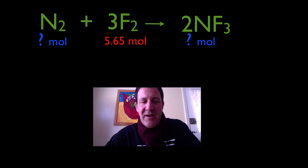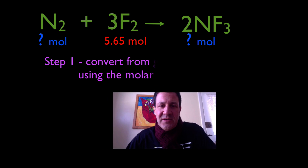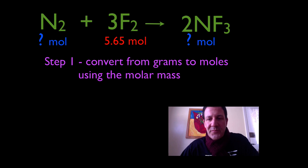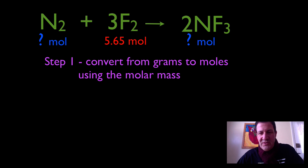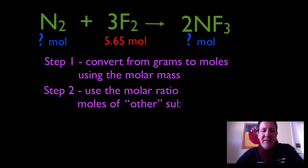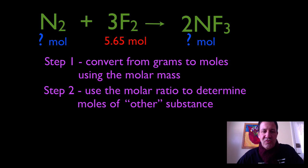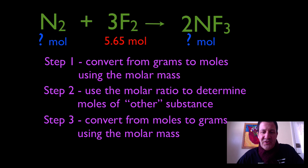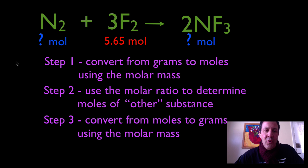For this problem and any other stoichiometry problem, you should keep in mind the three steps for successful stoichiometry. Step one is convert from grams to moles — we've been given moles, so we don't need to do step one. Step two is use the molar ratio to determine the moles of the other substances. The third step is to convert from moles back to grams, but we have only been asked to figure out how many moles, so we're only going to use step two in this problem.